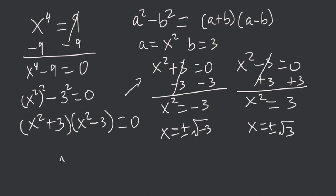Now, square root of negative 3 can be written as square root of 3 times square root of negative 1. And negative 1 is imaginary.